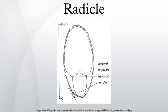In botany, the radicle is the first part of a seedling to emerge from the seed during the process of germination.